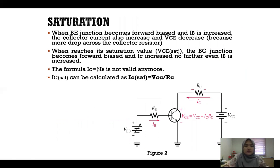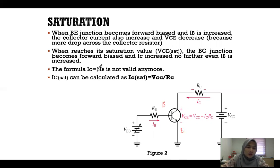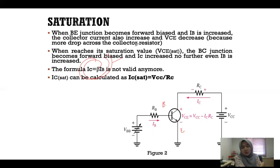When the BE junction becomes forward biased and IB is increased, the collector current also increases and VCE will decrease because there is more voltage drop across the collector resistor. When it reaches the saturation value — VCE(sat) — the BC junction becomes forward biased and IC increases no further even if IB is increased. So in the saturation region, the formula IC = β·IB is no longer valid; you can only use that formula when operating in the active region.